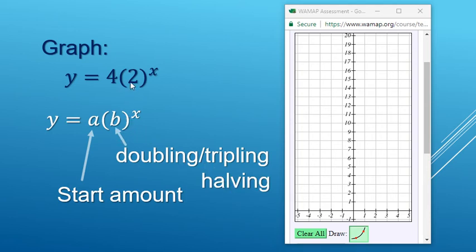So in this case here, a 2 takes the place of the b, so I know I'm going to be doubling, and then the 4 takes the place of the a, so there's our start amount. So here we go. We start at 4, and then the next point over, we're going to double it.